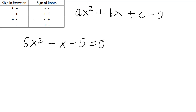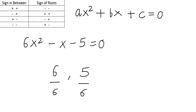Let's look at another example. Suppose the equation is 6x squared minus x minus 5 is equal to 0. The first thing we do is find the product, which is 6 into 5 = 30, and we have to get the sum as 1, which can be done using 6 and 5. Then we divide by the coefficient of x squared, which is 6 — never forget this step. Now since the sign in between is minus-minus, the sign of our roots will be plus-minus.